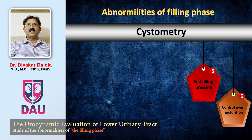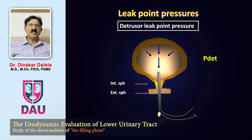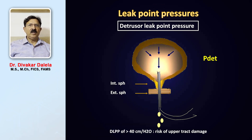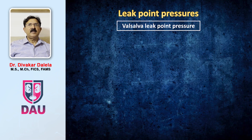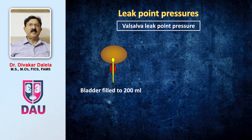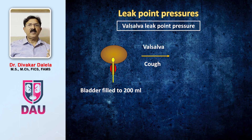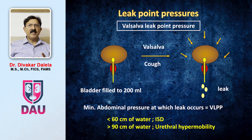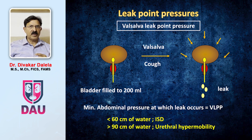Let me talk about two more features of the cystometry: end filling pressure and control over micturition. One test is called leak point pressure, also known as detrusor leak point pressure. When you fill up the bladder gradually, at a certain amount of pressure you notice leakage. This is called DLPP, and if it is more than 40 centimeters of water, you can have the possibility of damage to the upper urinary tract. There is another leak point pressure called Valsalva leak point pressure. The difference is: you fill the bladder to about 200 ml and then ask the patient to either cough or do a Valsalva maneuver and record at what level of pressure leakage is taking place. If leakage is taking place at a pressure less than 60 cm, it is regarded to be due to intrinsic sphincteric deficiency of the urethra; if it is happening at a higher pressure of more than 90 centimeters of water, it is regarded to be due to urethral hypermobility in patients of stress urinary incontinence.